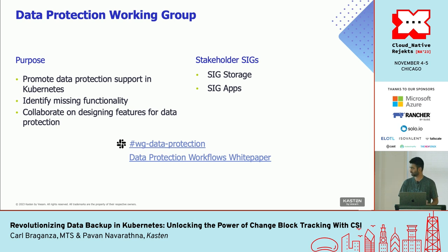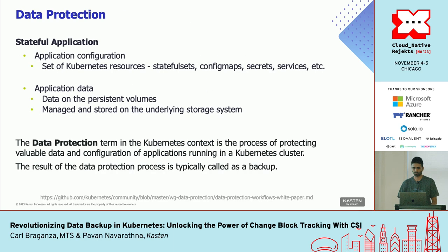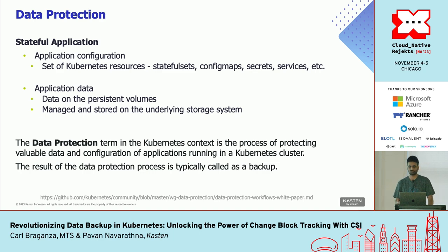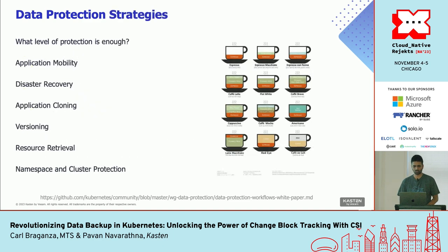There was a white paper that this group published a couple of years ago, mostly speaking about data protection. In the white paper, a stateful app is divided into two parts: the application configuration and the application data itself. The configuration is mostly a set of Kubernetes resources — stateful sets and other YAML or JSON specs that we deploy. Application data is found on persistent volumes, mostly managed by underlying storage systems. Data protection is defined as the process of protecting both these components on Kubernetes, and the output of this process is called a backup.